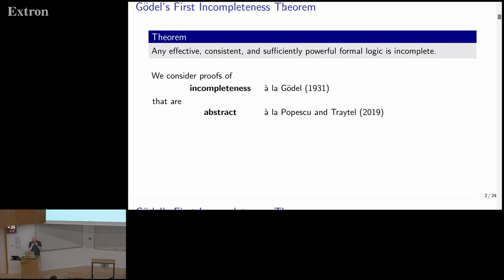In particular, our proofs are going to be abstract. Rather than one monolithic proof, we're going to attempt to factorize these proofs into different parts to really figure out what the essence of incompleteness is. Something similar has been done by Popesco and Trite, who factorized Gödel's original incompleteness proof into arithmetical requirements and other properties of the formal systems in play.